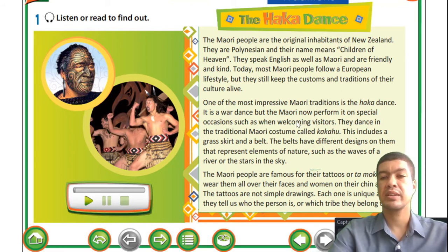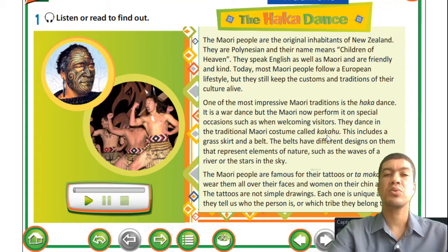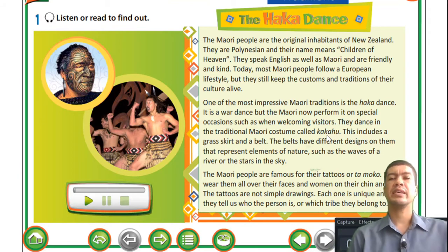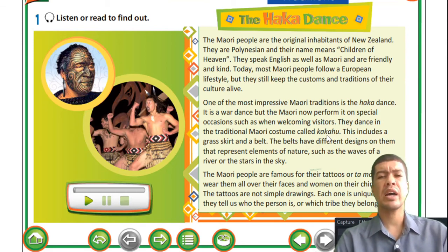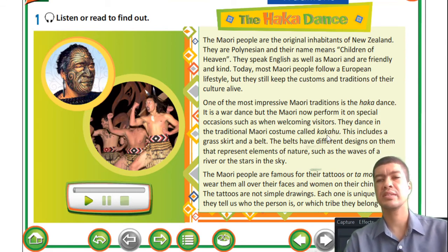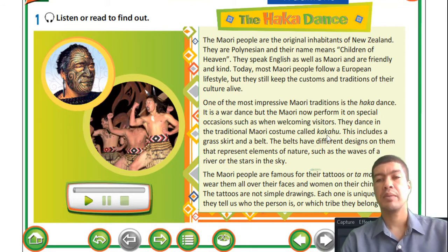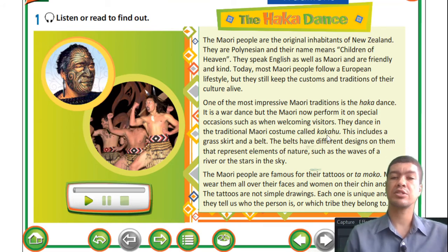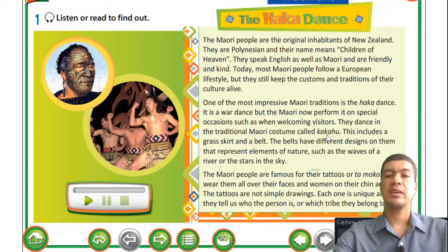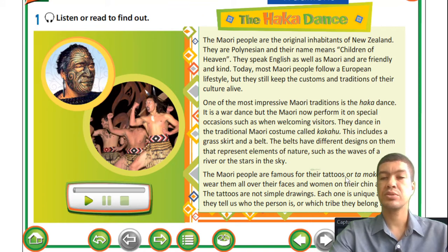The Haka dance is a traditional dance. Let's look at another word - kakahu - this is the costume that they wear. Most of you guys would notice that they also wear these skirts around them. This is just a culture where they feel comfortable. It is not uncommon for them to walk around in these skirts - it may seem like something different, something you are not used to, but this is their culture and they feel quite comfortable in it.